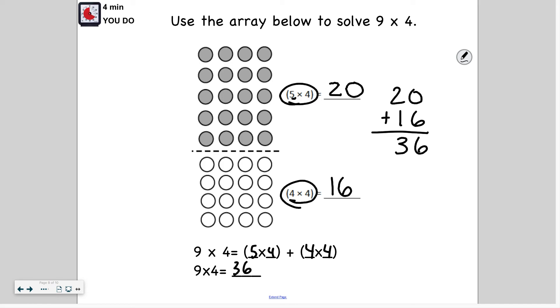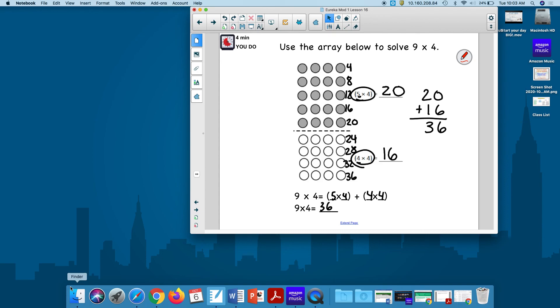I can always check my work using my array. So I can skip count by fours. Four, eight, 12, 16, 20, 24, 28, 32, 36. So we are correct. Thank you so much for watching. And like I said, if the distributive property is not a strategy that you particularly like, it does not mean that you cannot use other strategies. It's just a strategy that I want you to become familiar with, because you will be using this again in fourth grade. Thanks, everyone.